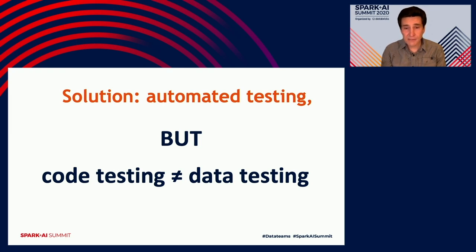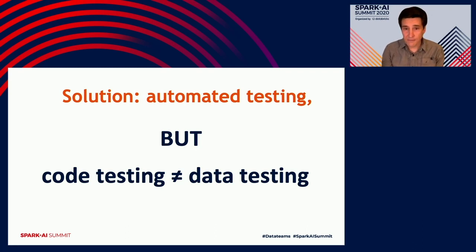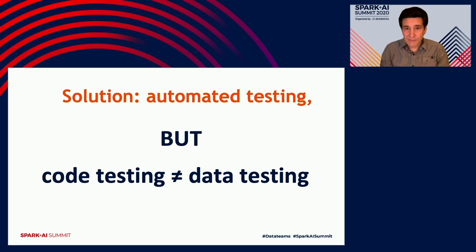Testing data is different from testing code in two very important ways. First, you control your code — if it fails your tests, you can just change it. Data you don't necessarily control; it might come from a data-generating process you observe but cannot change. Second, in code testing, your tests specify correct behavior — if code fails the test, it's wrong. In data testing it's not as simple. Data is almost like a natural phenomenon, and when you use it for a particular purpose you make assumptions about it in your pipeline, and you can verify if those assumptions make the data fit for that purpose.